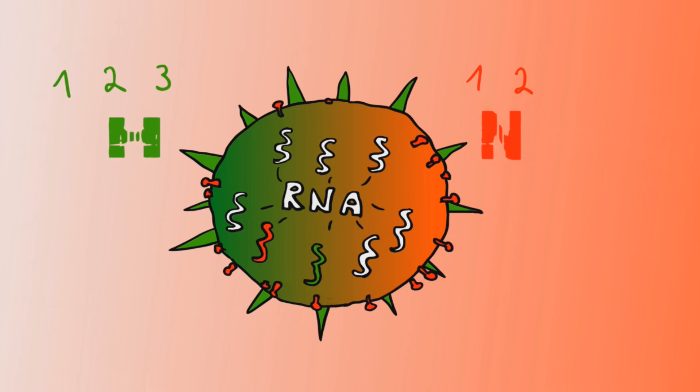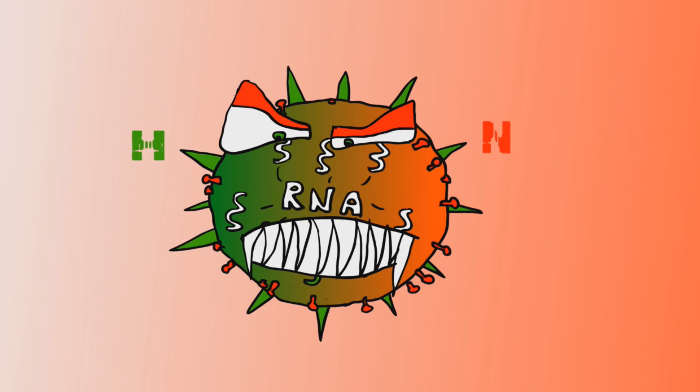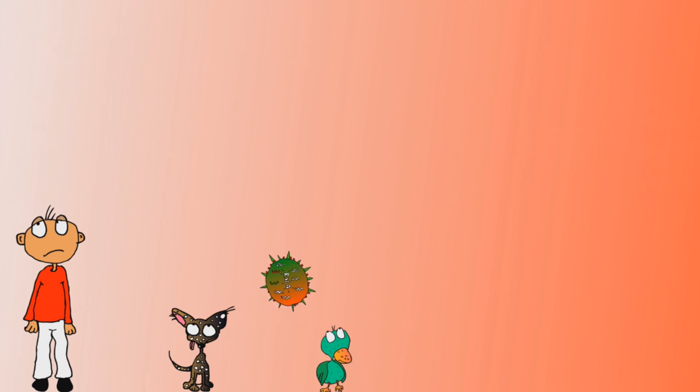The H's and the N's are mostly responsible for telling how virulent a virus will be. Certain types of these proteins bond better to humans, others to mammals or birds, and some can bond to many different animals.